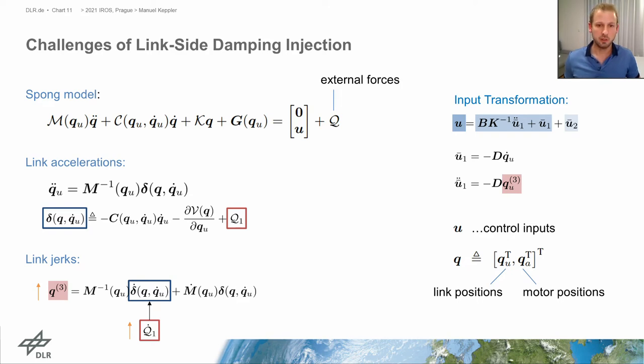As argued in the paper, this limitation concerning the implementation of link side damping is not specific to the ESP control. In fact, this limitation is a manifestation of the physical fact that the link side torque bandwidth of articulated soft robots is fundamentally reduced compared to fully actuated robots. For example, we would face the same issues when implementing link side damping through a joint torque tracking controller since it would also rely on feedback of the link jerk signals.